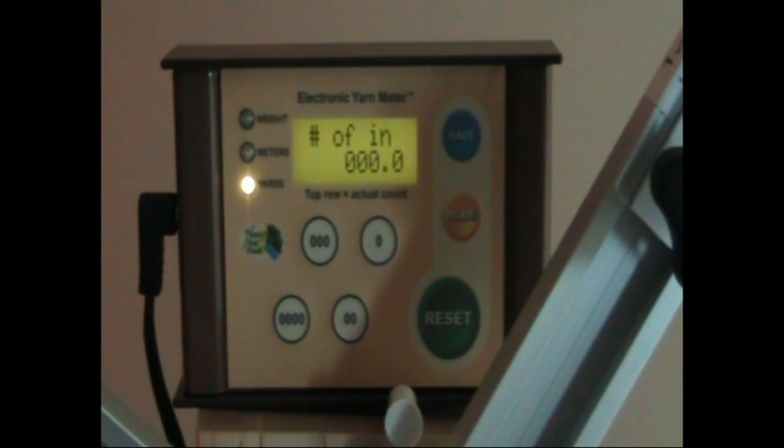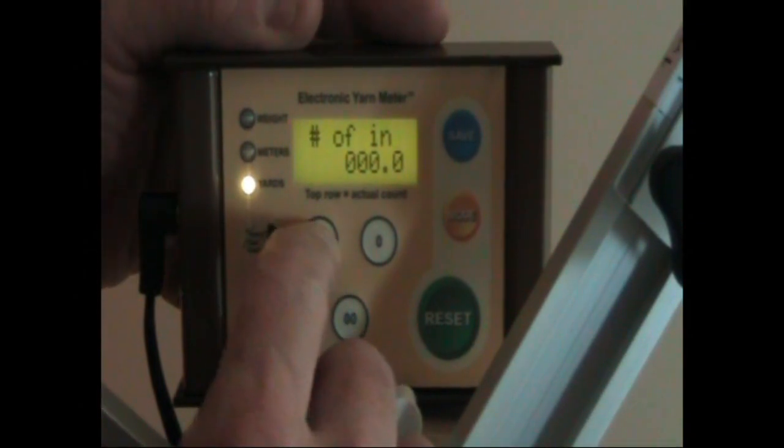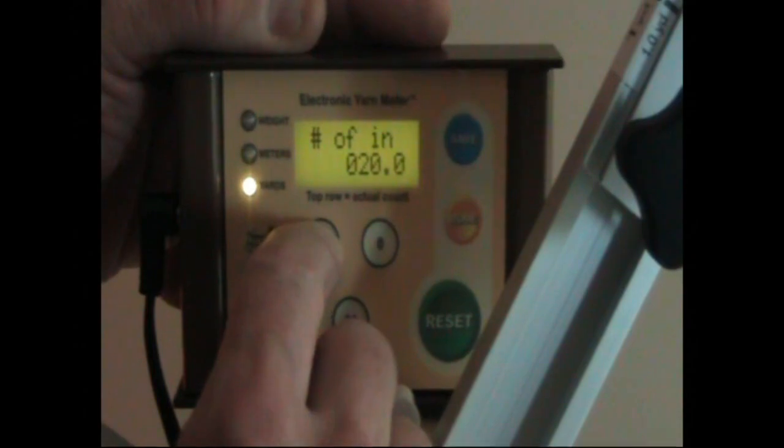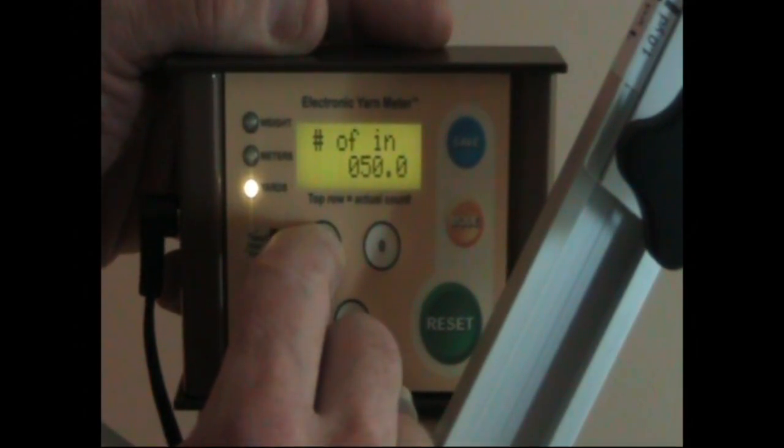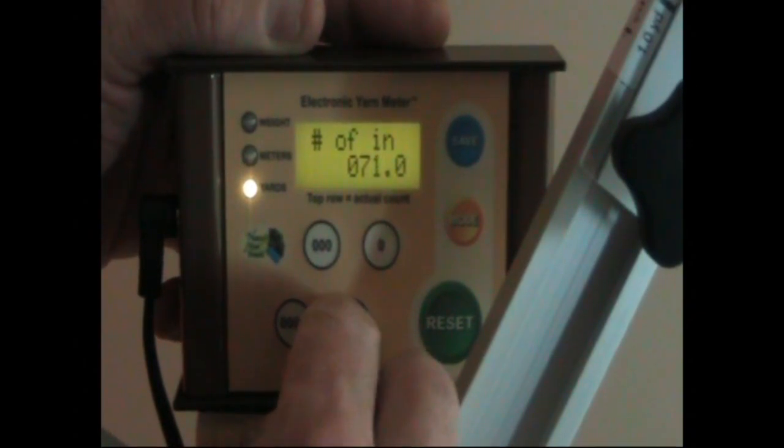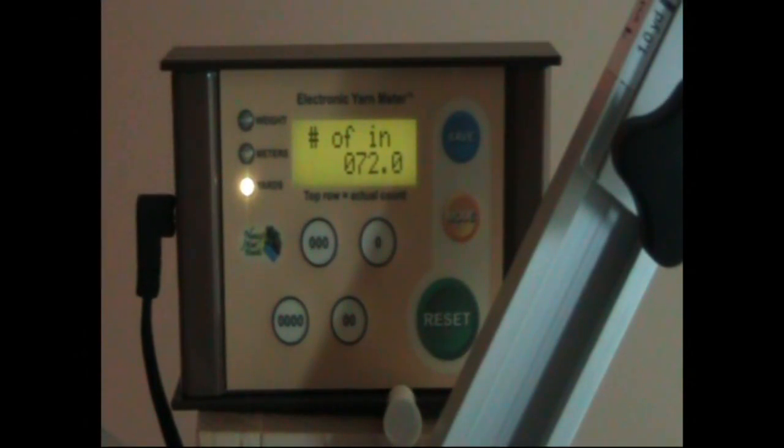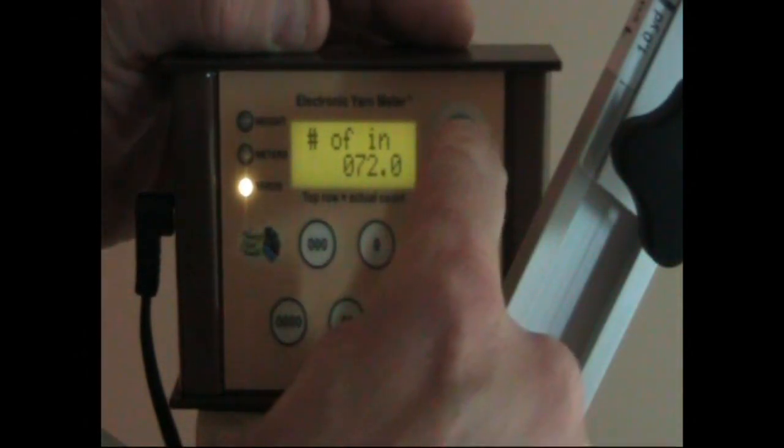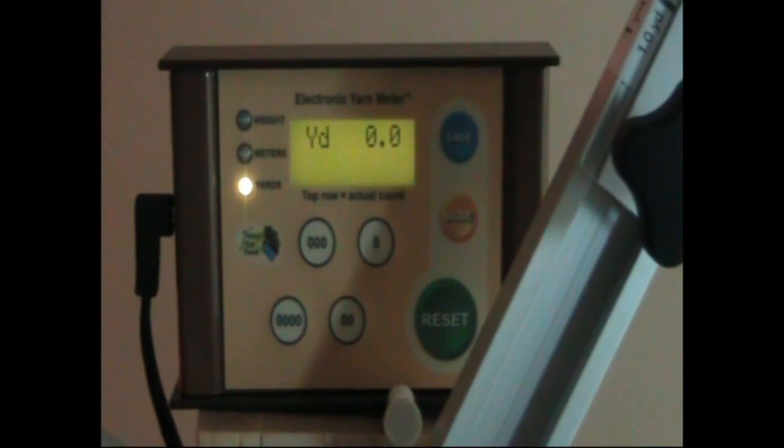In this case, this is wobbling here because I don't have it fastened to the arm. This is a pre-production unit. I'm going to enter 72 inches. Okay, now that happens to be two yards. We'll save that number.